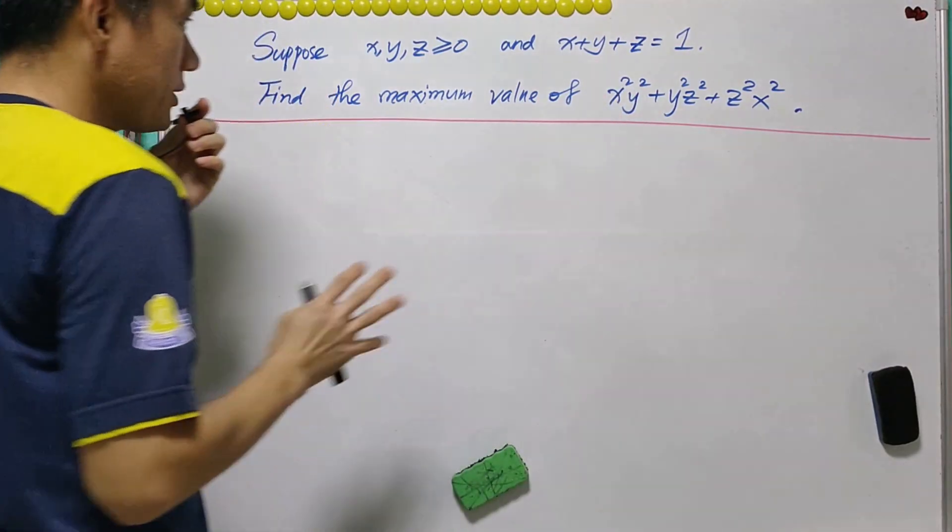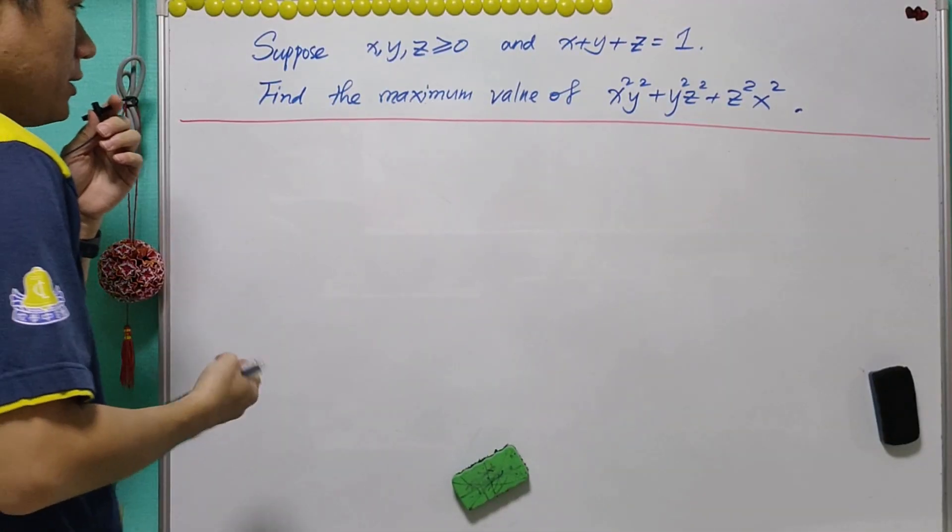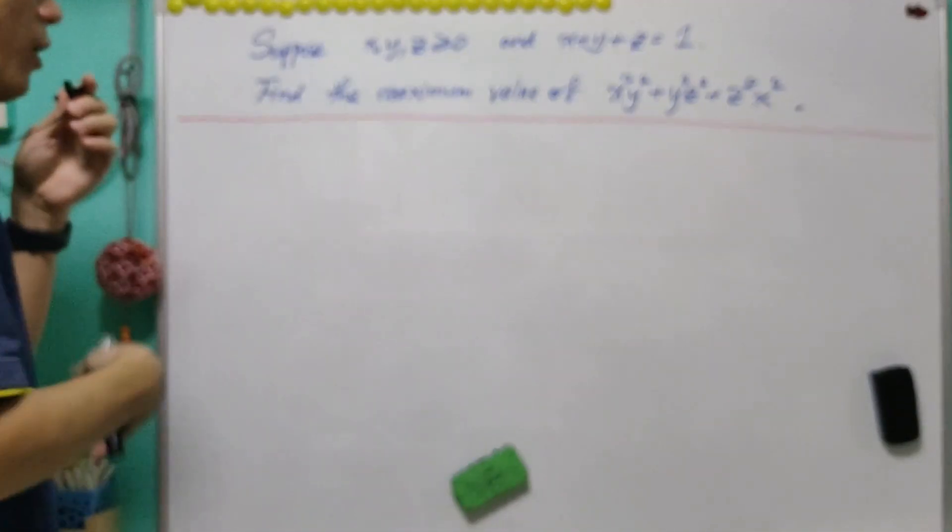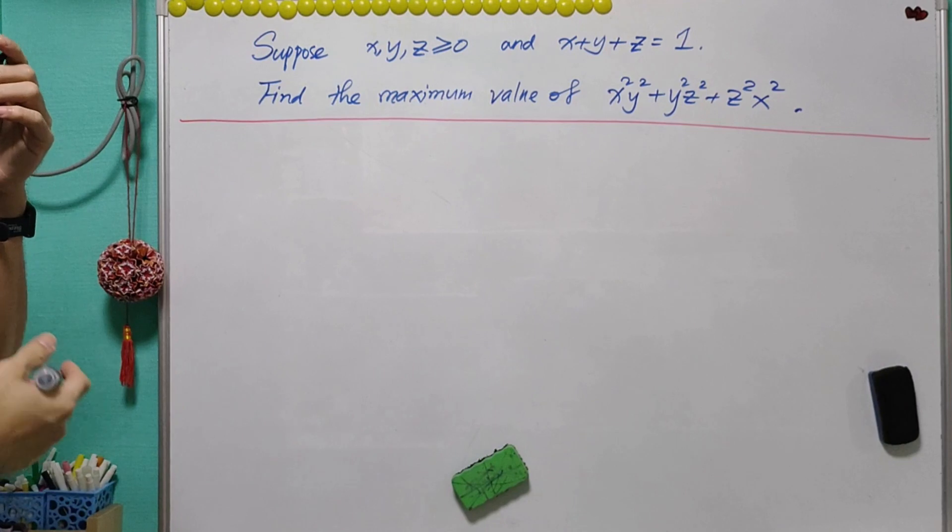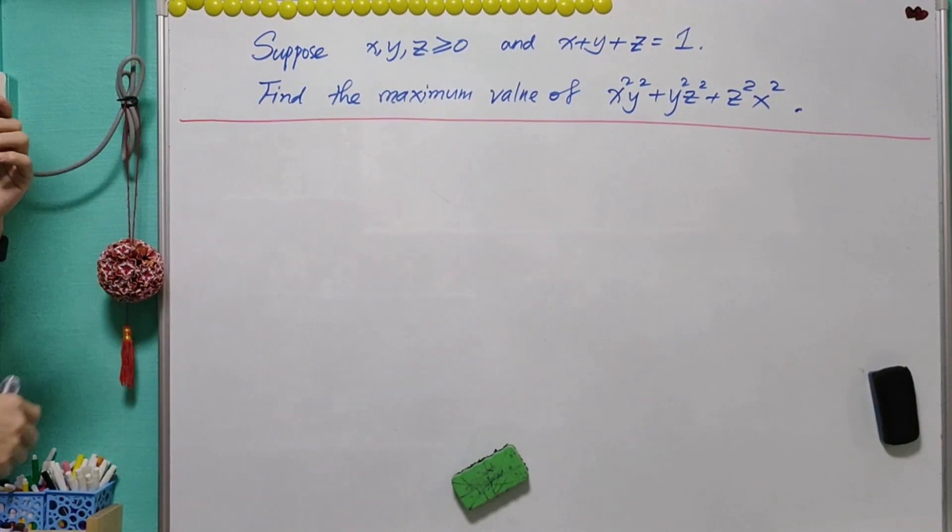The given expression looks symmetrical and intuitively think that the maximum value will occur when x equals y equals z. Interestingly, for this question, this is not the case.